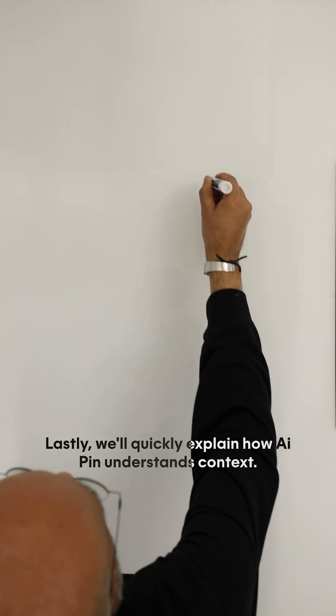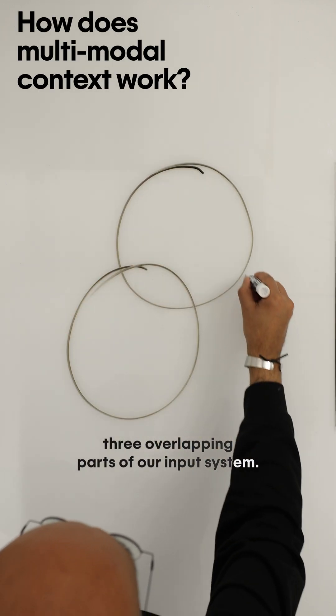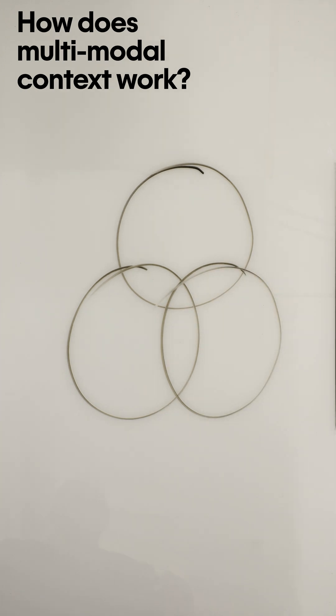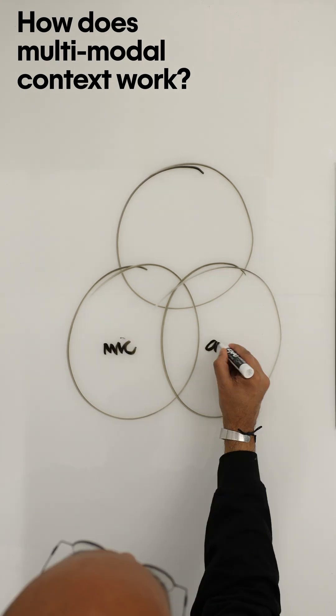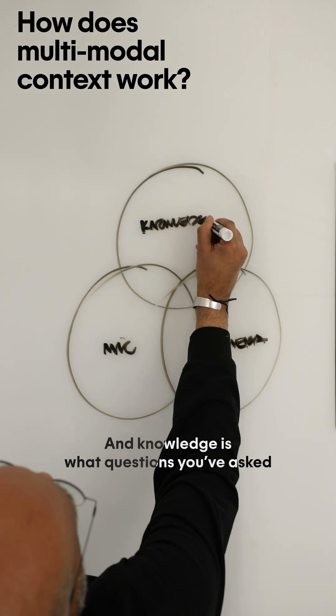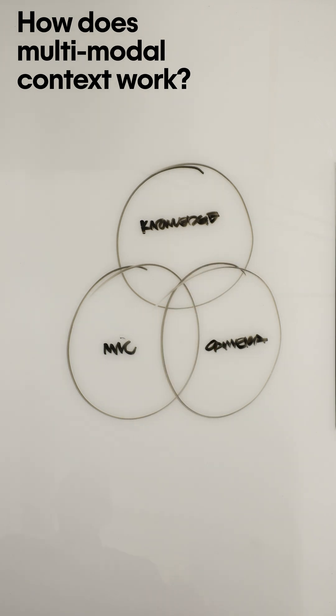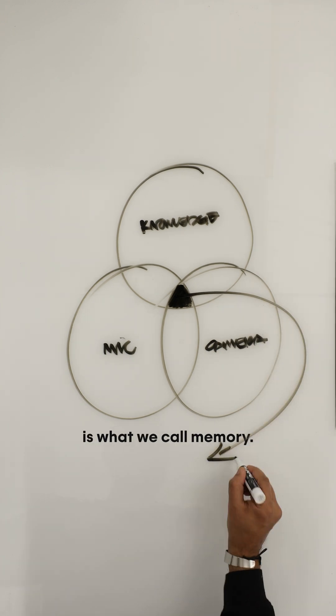Lastly, we'll quickly explain how AI Pin understands context. And that comes from three overlapping parts of our input system. We've got the microphone, which understands what's being said, and our RGB camera and depth sensor understand what's being seen, and knowledge is what questions you've asked or things you've told your Pin. And in the center, in the overlapping section here, is what we call memory.